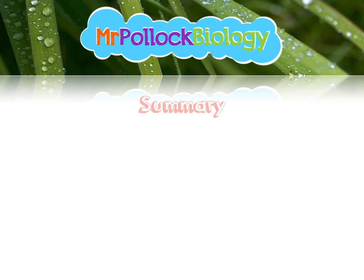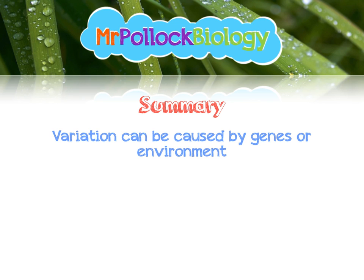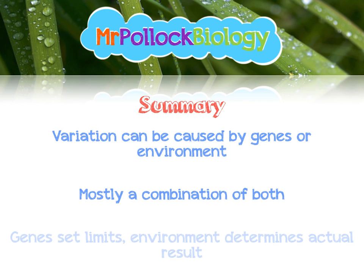To summarise: variation can be caused by genes or environment, but mostly it's a combination of both. Genes set the limits and the environment determines whereabouts in that range you end up. That's pretty much it for variation — thanks very much for watching, I hope you find this useful. Please like, comment, and subscribe.